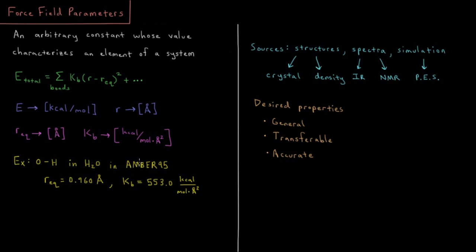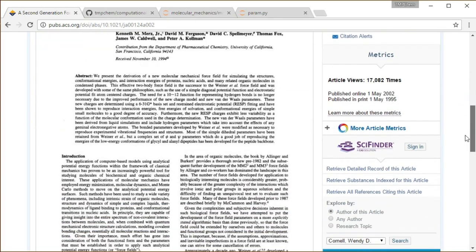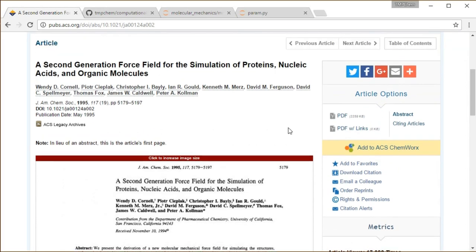These values are typically published somewhere, or they're deep inside of some program that you can download and install, some free, some not free. For example, the AMBER95 parameters were published in this paper, which I mentioned in the previous video as well: Jacks 1995, 117, page 5179 is the citation. You can take a look at that if you have access to online journals through your institution.